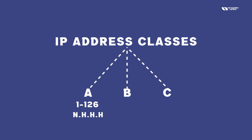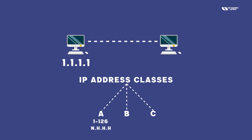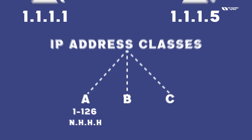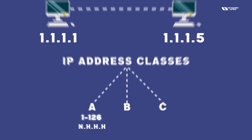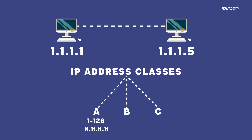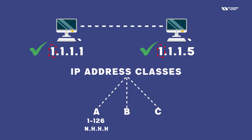So if two computers are connected together with IPs 1.1.1.1 and 1.1.1.5, in Class A any IP address starts between 1 and 126 — we just need to check the first part. If they are matching, it means they will communicate with each other.